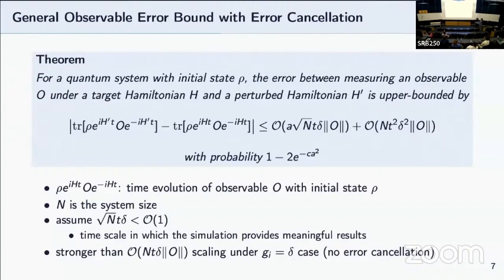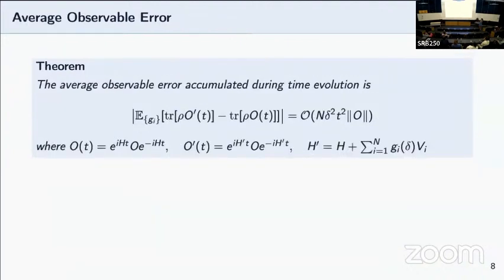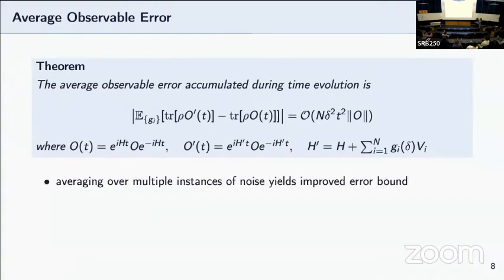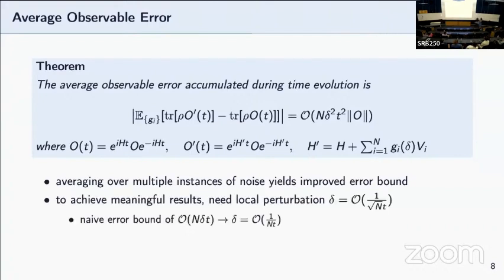So next, I will provide a brief sketch of the proof on how we got to this result. First, we want to show how much the average observable differs. So we average over multiple instances of the noise, which gives us this expectation value with respect to G_i terms. We want to see how it differs from the ideal Hamiltonian time evolution. Here, it's very important that the leading order term is second order rather than first order. So with this result, we show that in order to achieve meaningful results, we only need local perturbation with order of 1 over square root of n, rather than the previous naive result of 1 over n. Again, quadratic improvement.